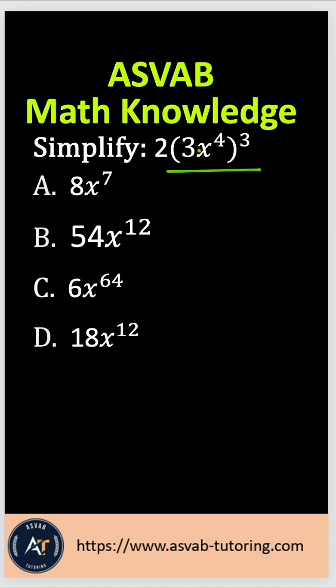This is not just 3 times 3 though, right? So what do you have to do here? Let's keep the 2 separate outside: 3x to the 4th power times 3x to the 4th power times 3x to the 4th power, right?